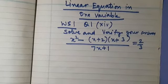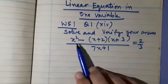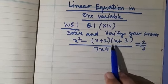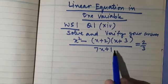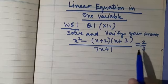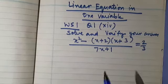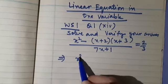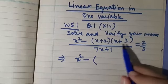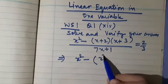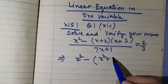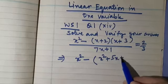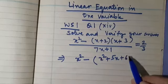Let us solve this equation. We also have to verify the answer. The question is: x² minus (x plus 2)(x plus 3) upon (7x plus 1) is equal to 2 by 3. In the numerator, we will simplify first. Multiplying the two binomials we get x² plus 2x plus 3x, that is 5x, plus 2 into 3, that is 6.